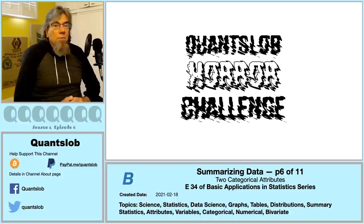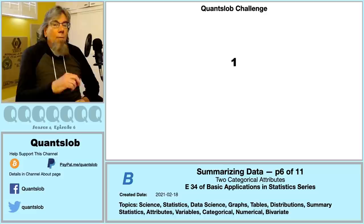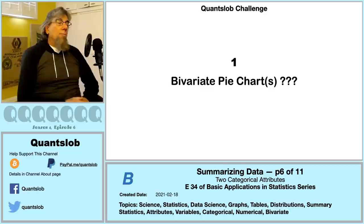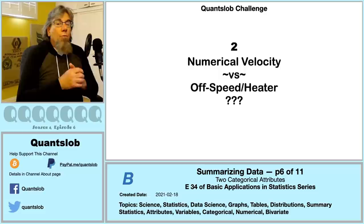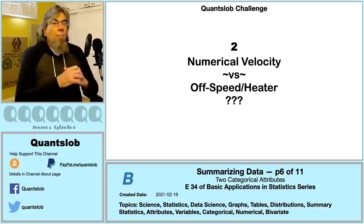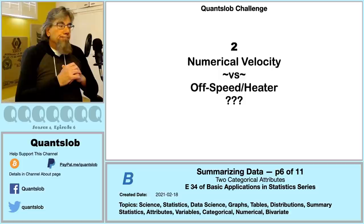Before we close out, it's time for our two-part QuantSlob challenge. First: how might we use pie charts to show a bivariate distribution between two categorical attributes? Second: our high/low velocity categorical attribute was created from the numerical attribute pitch start speed — so how might we convey the relationship between the heater/off-speed categorical attribute we created and the original numerical pitch velocity attribute? We'll pick this up in part seven.